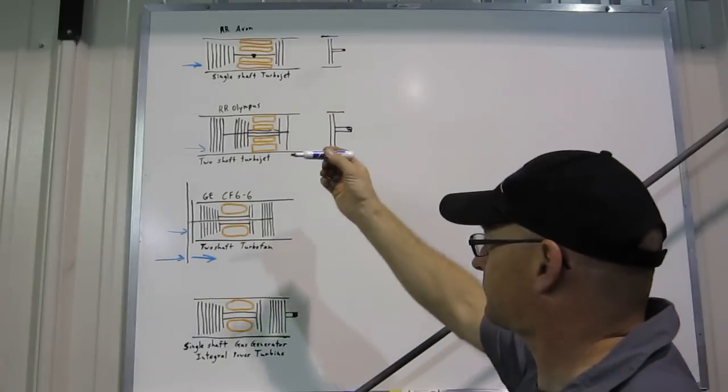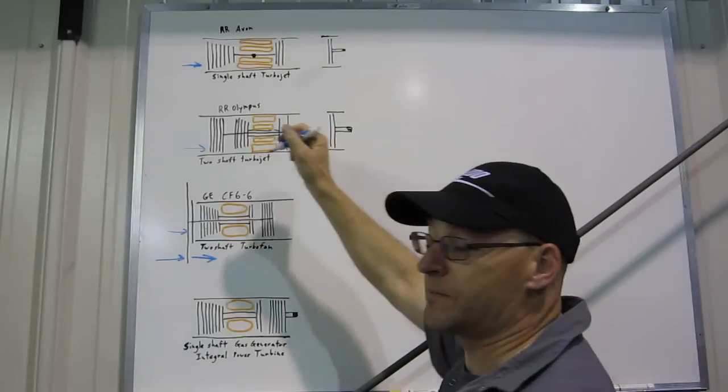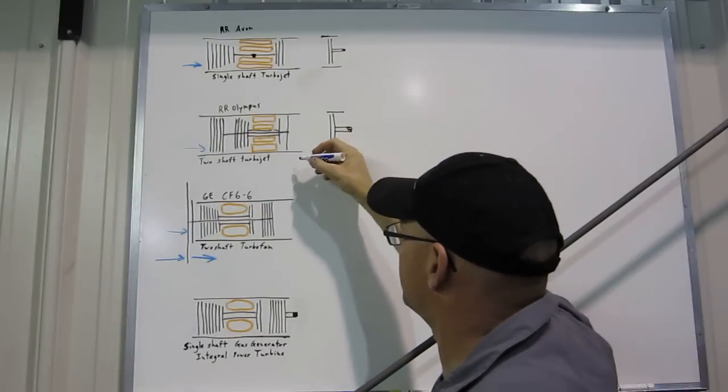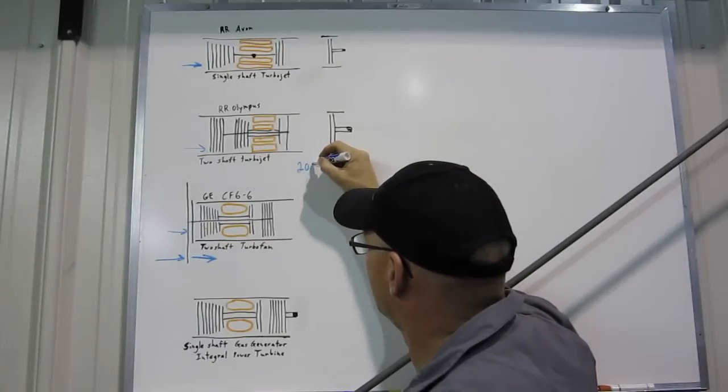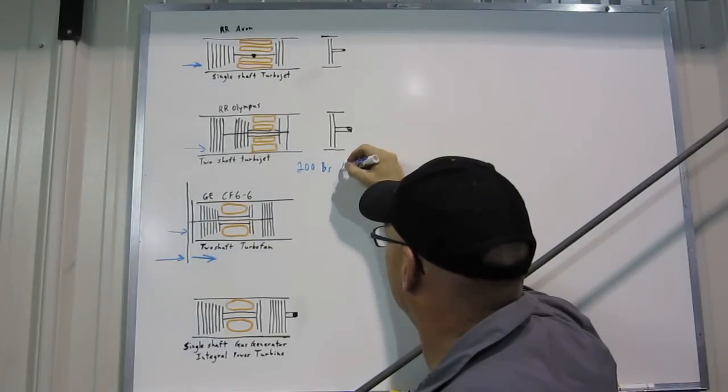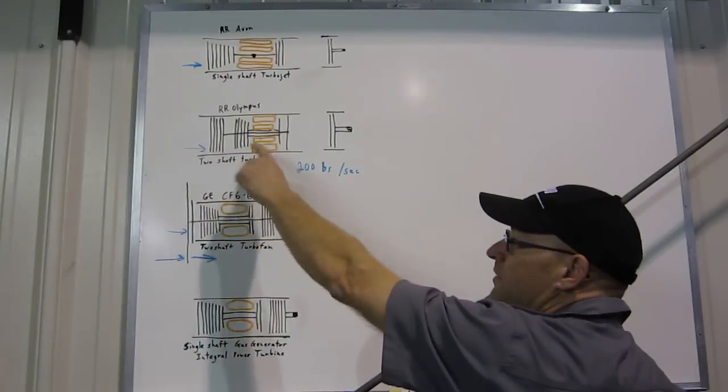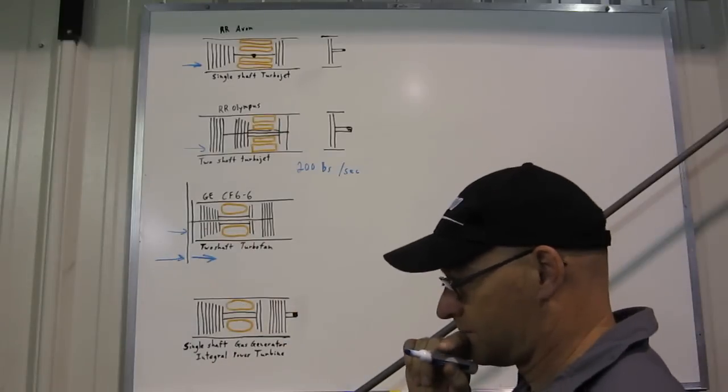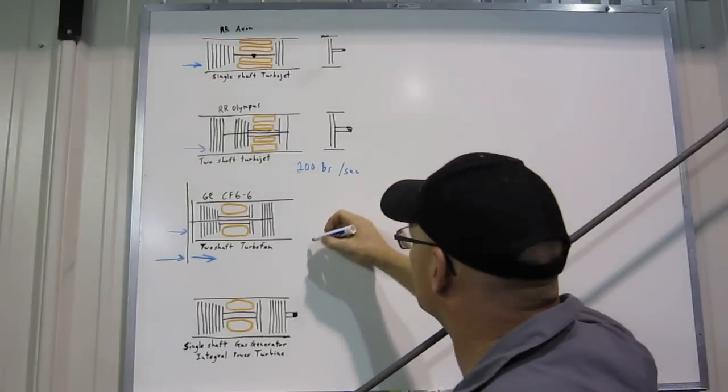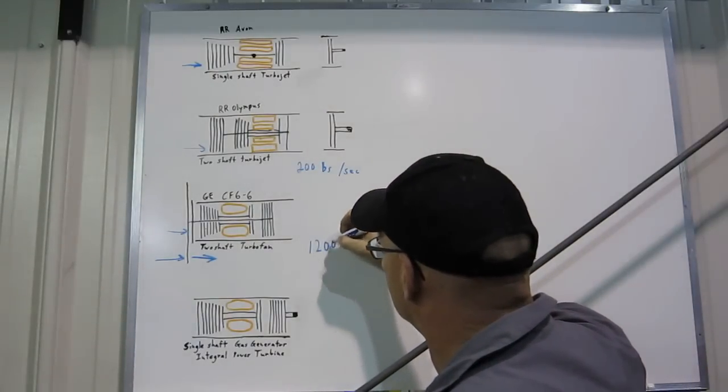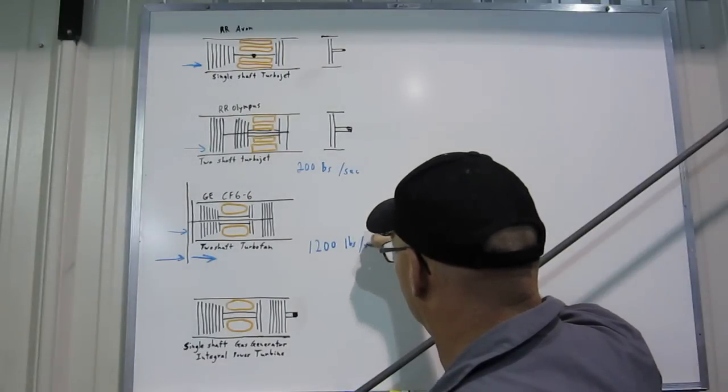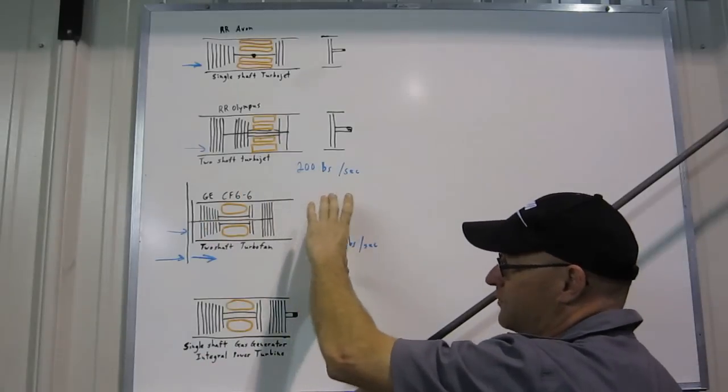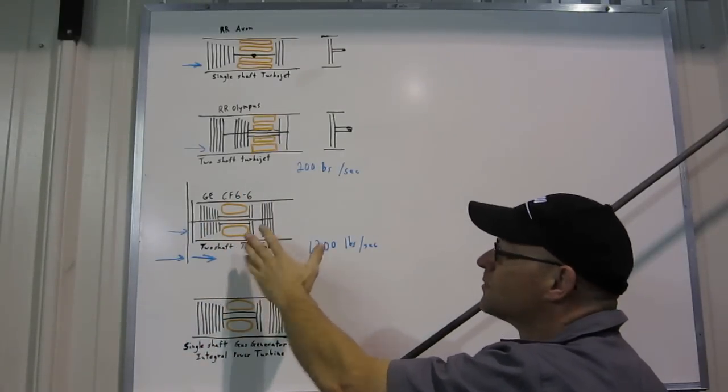The total airflow for the Olympus is around, I'm vaguely, fuzzily putting out numbers. It's about, let's say 200 pounds of air per second and a very high velocity exhaust jet. The CF-6 has, now this is roughly around 1200 pounds per second. So you can see there's a much larger amount of air being shoved backwards, and the total average velocity of the exhaust is quite a bit lower.